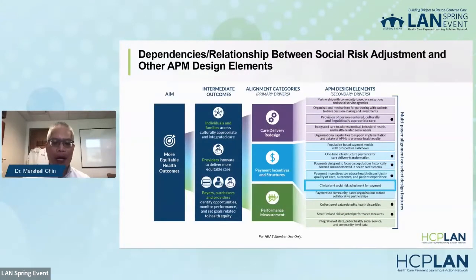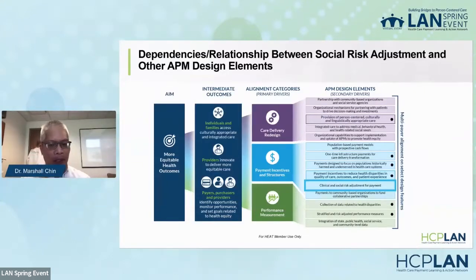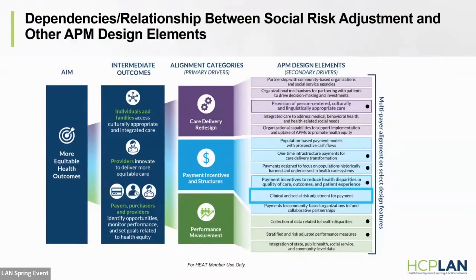There was a technical guidance report from the HEAT at the end of 2021, and one of its key figures is a conceptual model showing how APMs can lead to more equitable health outcomes. This is a reminder that it's not social risk adjustment for social risk adjustment's sake — it's all geared toward how social risk adjustment fits into achieving more equitable health outcomes. The diagram's major categories show the domains in which alternative payment models work: care delivery redesign, payment incentives and structures, and performance measurement.